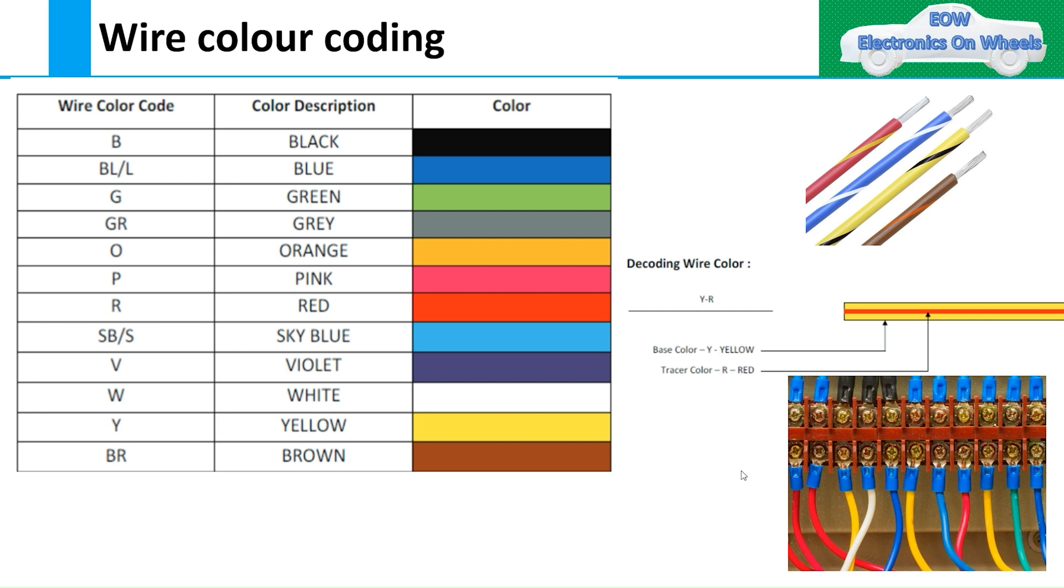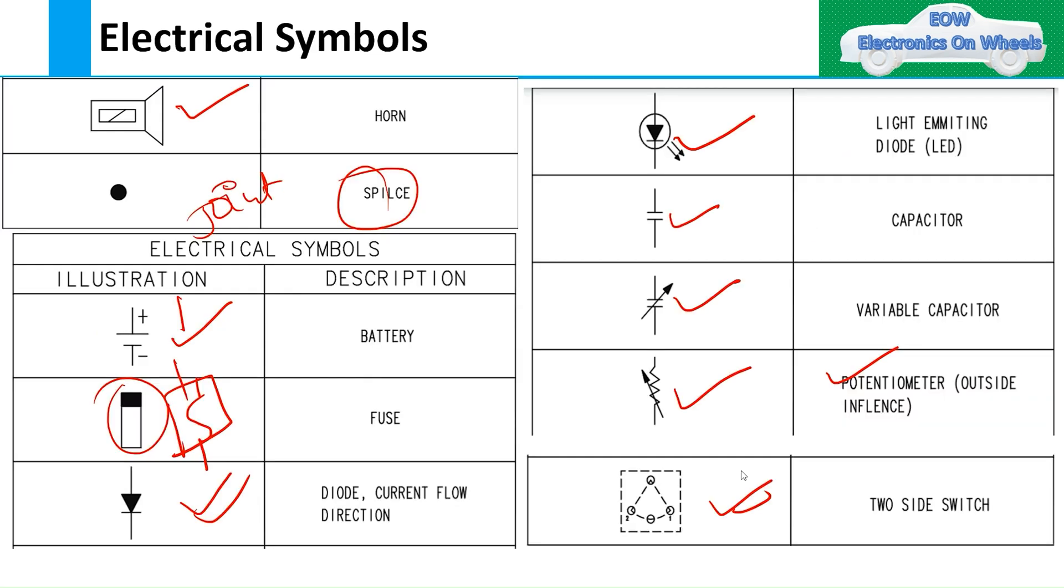So this is all about the electrical symbols. In the next series or next chapter, we'll try to understand the wire colors and then we'll try to read one wiring diagram. Thank you for your support. Please like, subscribe, and comment if you understood the electrical symbols - that's the first chapter of this series.